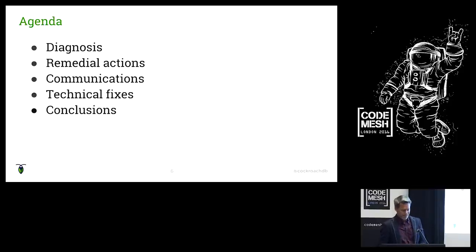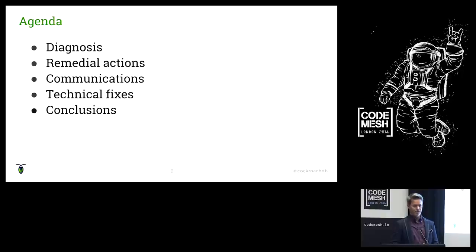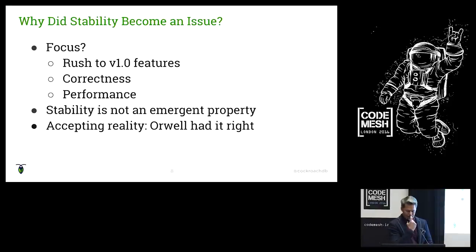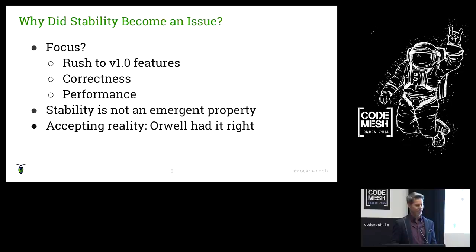In this talk I'll discuss the diagnosis — how did we finally conclude that something needed to be done — the remedial actions we took in terms of process and management, and then communication. We had an internal communication problem, but also an external one because it's an open source system. I'll go into a deeper dive on the technical fixes, and some conclusions. The big question: was this inevitable, or could it have been avoided when building a system like this?